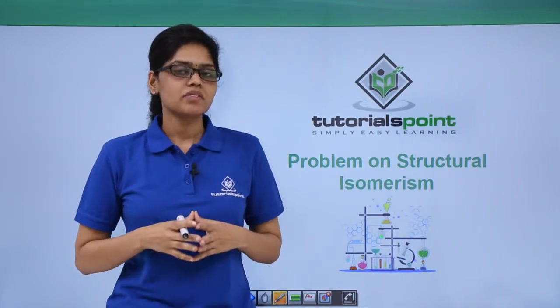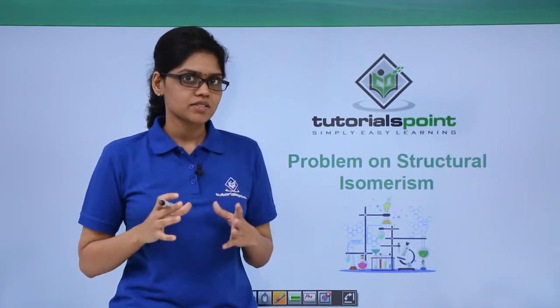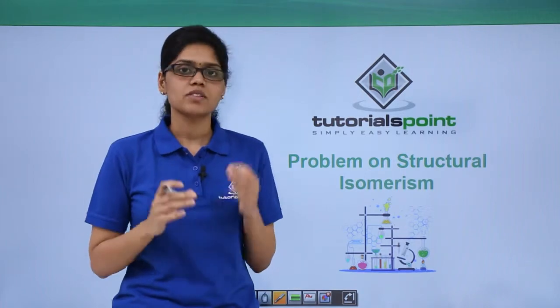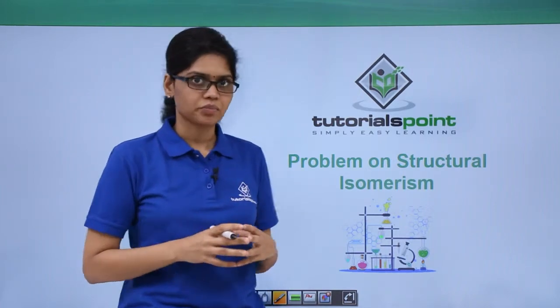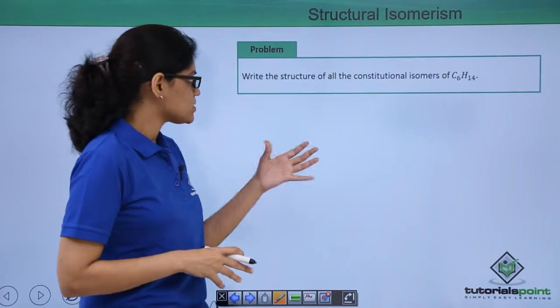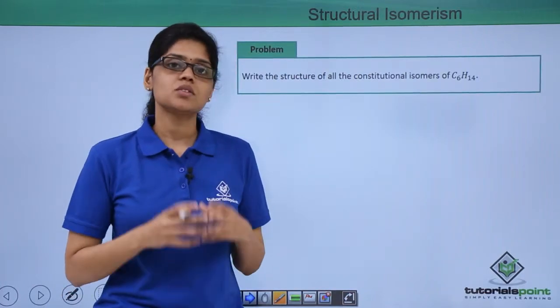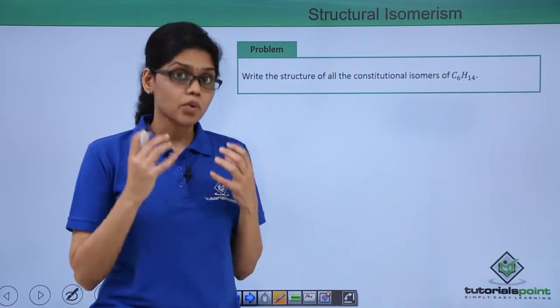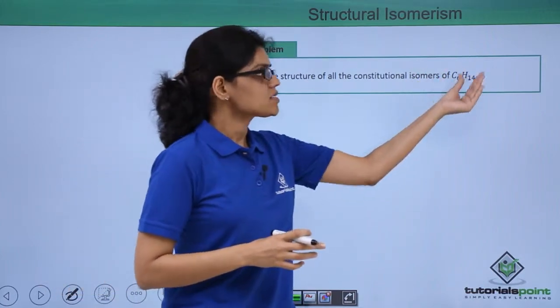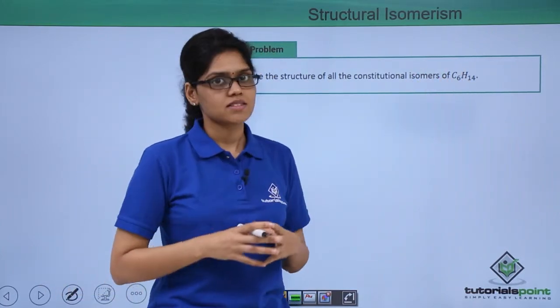Hello everyone. In the previous video we talked about structural isomerism, and now let's solve a simple problem based on the same. In this video, the question is to draw all the possible constitutional isomers of C6H14 or hexane.